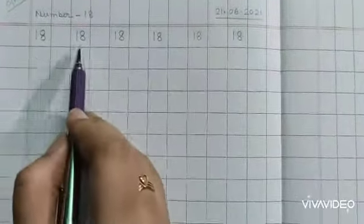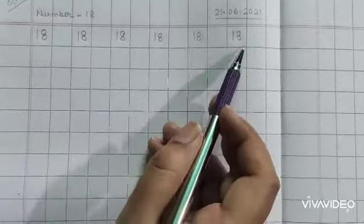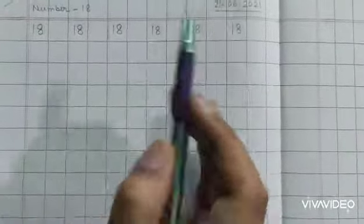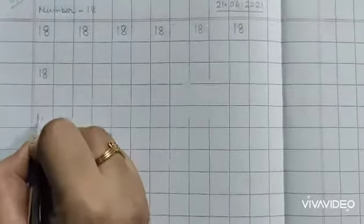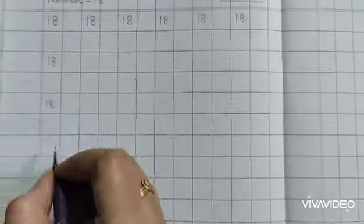6 times. 1, 2, 3, 4, 5, 6. Six times in a single line you have to write. Next, follow the columns. Leave one box and continue.